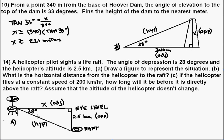If the helicopter flies at a constant altitude, we're on part B: what is the horizontal distance from the helicopter to the raft? Given our perspective from this angle, we see that our opposite side is 2.5 kilometers. The horizontal length we're looking for is our adjacent side. So again, we're going to use tangent. So tangent 28 degrees equals opposite over adjacent, which is 2.5 over x.